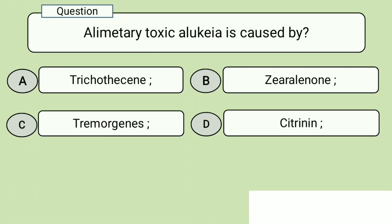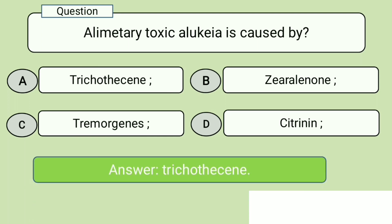Question 5. Alimentary toxic aleukia is caused by. A. Trichothecins, B. Tremorgens, C. Zearalenone, D. Citrinin. Answer: Trichothecins.